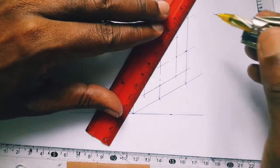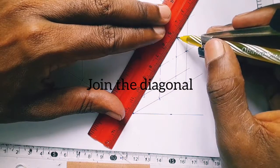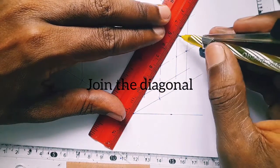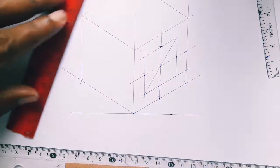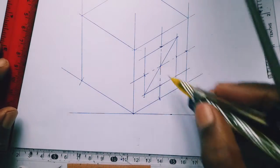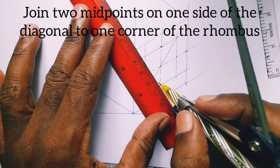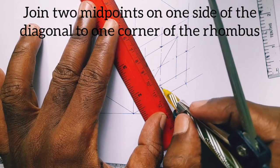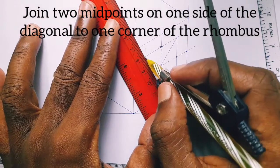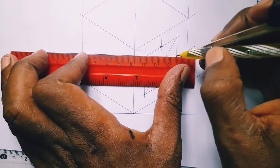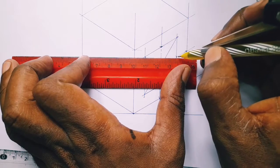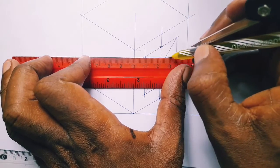Now we are using a four-arc method so we join the diagonal. Then we take two midpoints on one side of the diagonal and join them to the farthest corner of the rhombus to give us the centers of the four arcs that are going to be joined to give us our isometric circle.